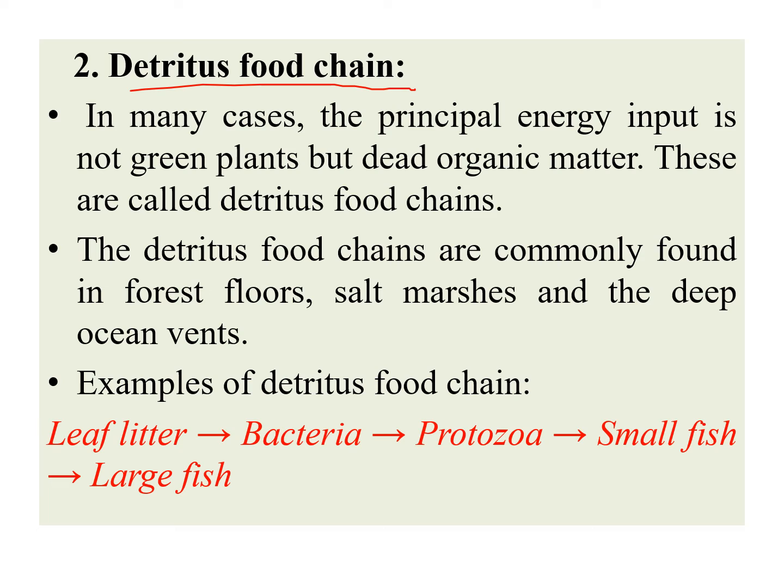The second type is the detritus food chain. The detritus food chain starts with dead and decaying organic matter, so it does not start with green plants. The moment an organism in a regular grazing food chain dies, the detritus food chain begins there. Detritus food chains are commonly found in forest floors, in soil marshes, as well as in deep ocean vents.